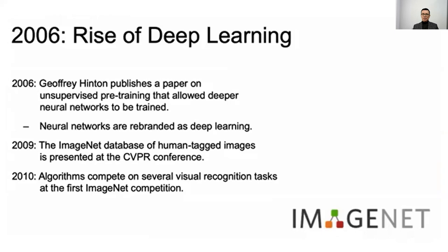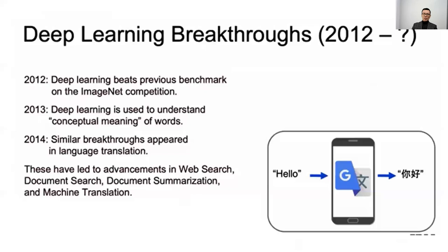In 2006, Geoffrey Hinton published a paper on unsupervised pre-training that allows deeper neural networks to be trained, and neural networks were rebranded as deep learning. In 2009, the ImageNet database of human-labeled images was presented at the CVPR conference. In 2010, algorithms competed on visual recognition tasks at the first ImageNet competition. In 2012, deep learning beat previous benchmarks on the ImageNet competition, and deep learning was used to understand the conceptual meaning of words.